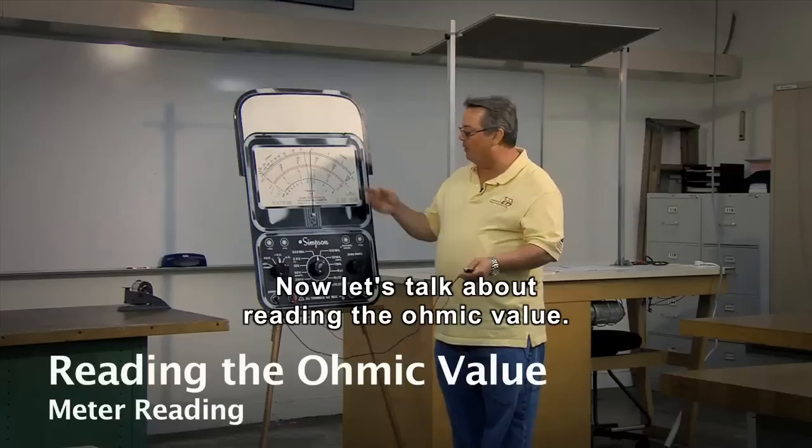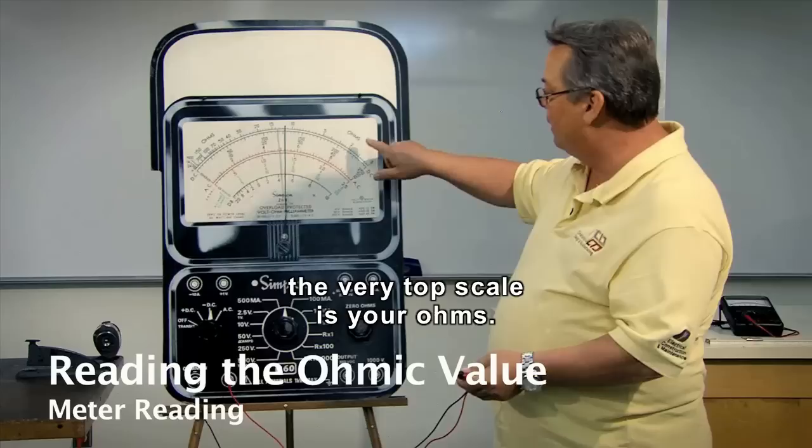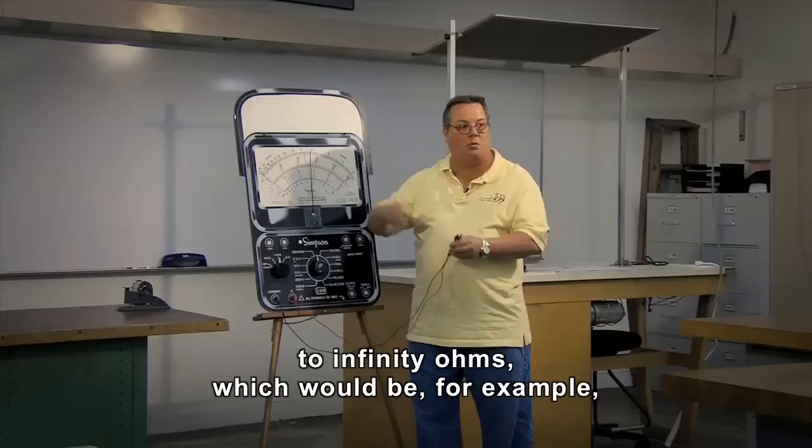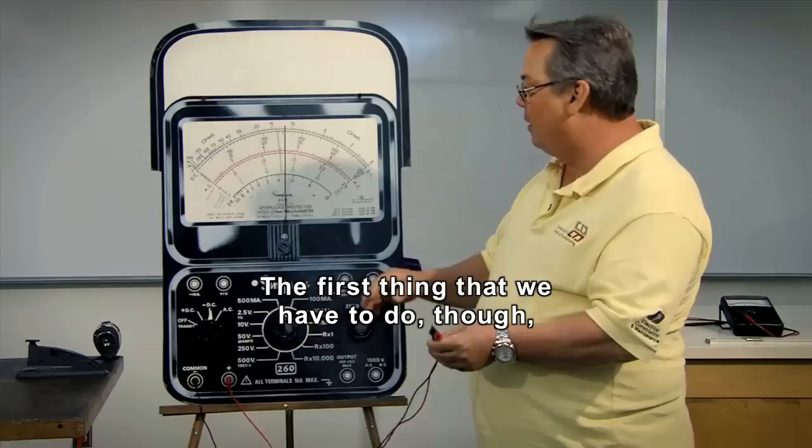Now let's talk about reading the ohmic value. If you look at the scale here, the very top scale is your ohms. Zero ohms here which means there's no resistance. And when you come over to here to infinity ohms which would be for example when I have the test leads open.